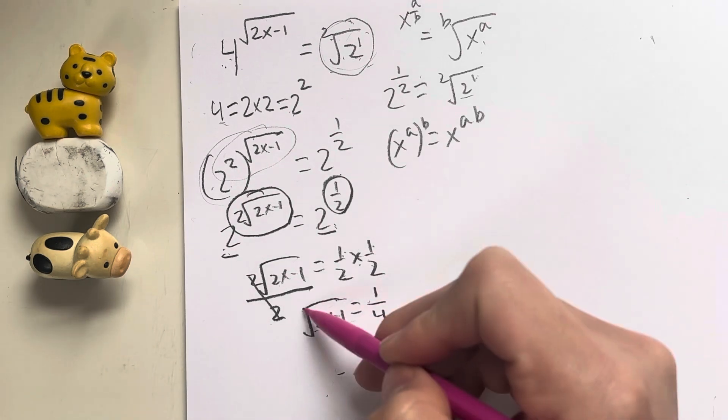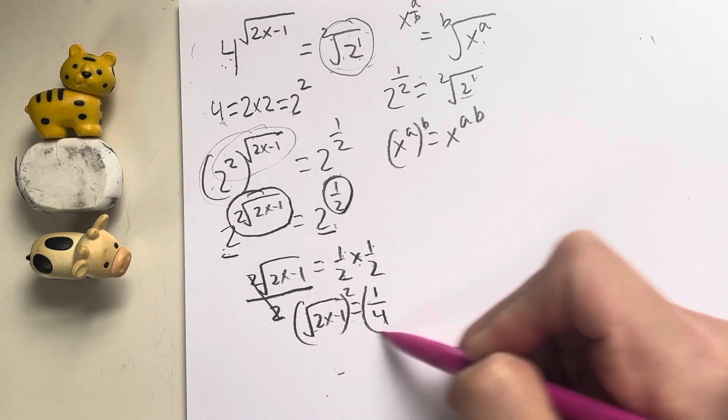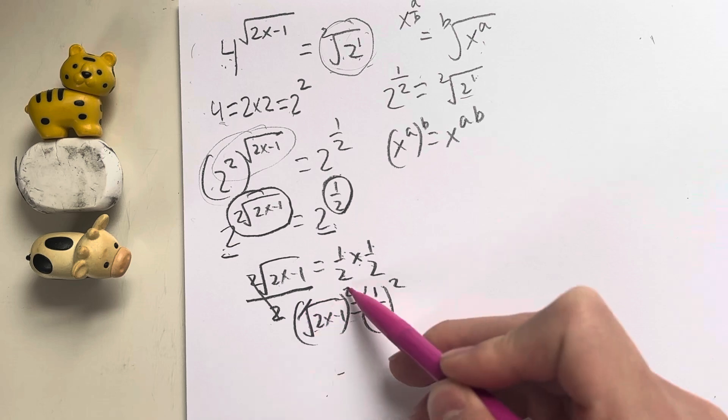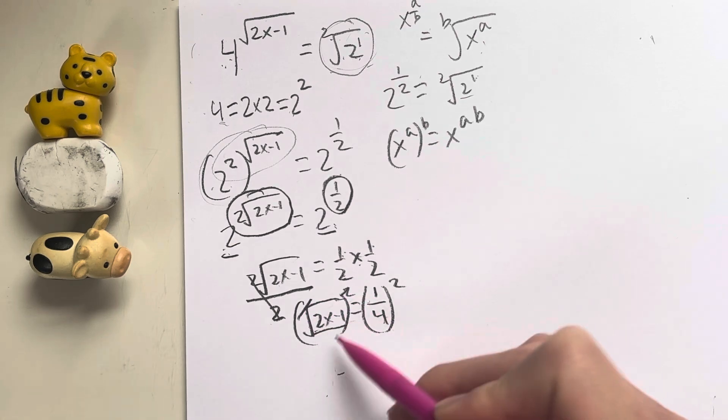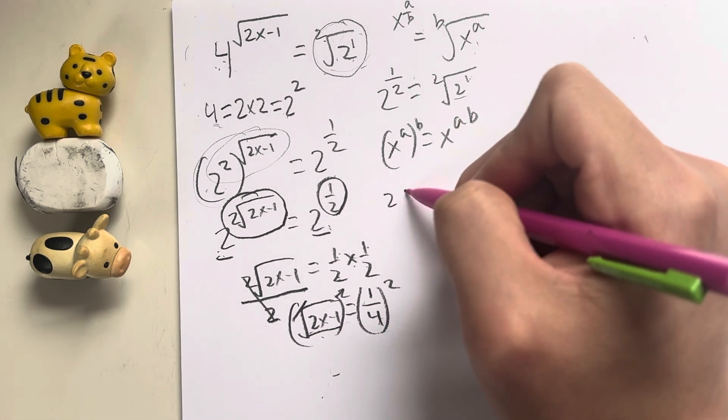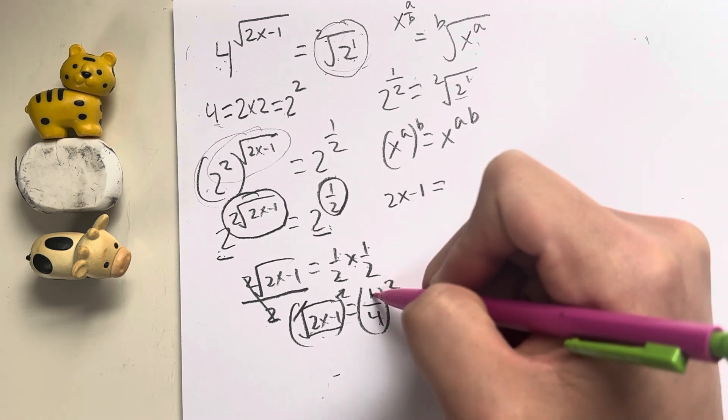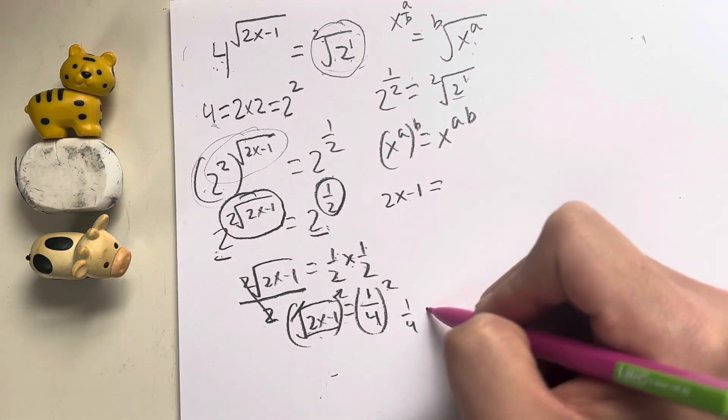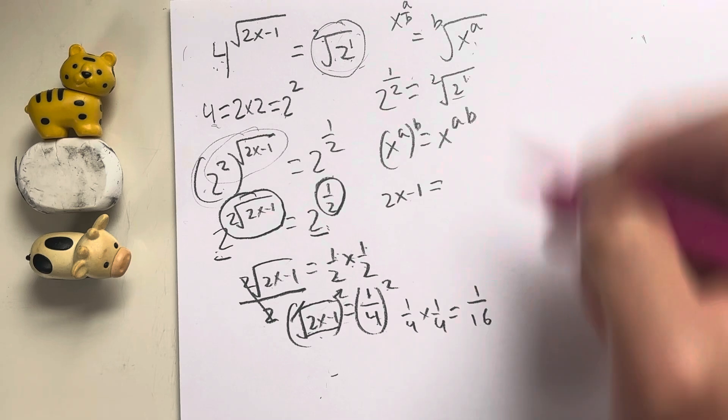So in order to get this by itself, I have to do the opposite of that, which means I have to square both sides. Square root and square cancel out, leaving me with only what's inside. So I'm just left with 2x minus 1, and that's equal to 1 fourth squared, which is the same as 1 fourth times 1 fourth, which is just 1 over 16.